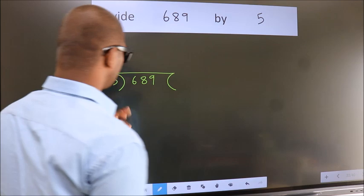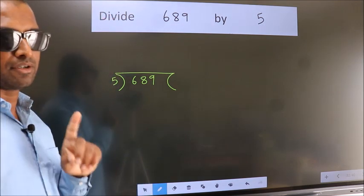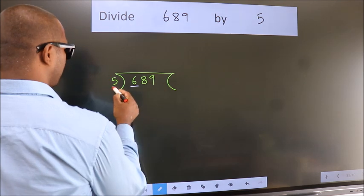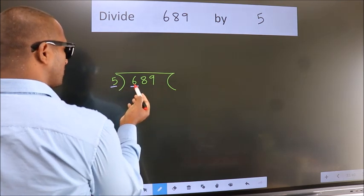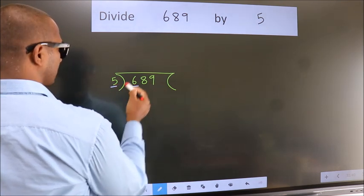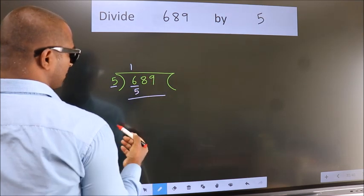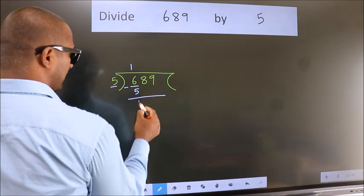This is your step 1. Next, here we have 6, here 5. A number close to 6 in 5 table is 5 once 5. Now, we should subtract. We get 1.